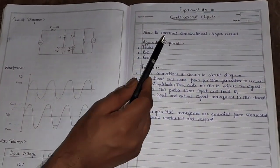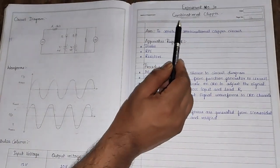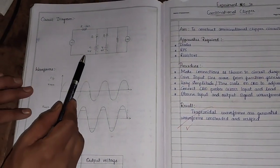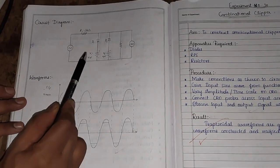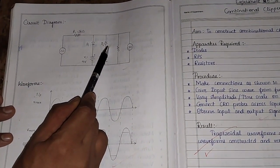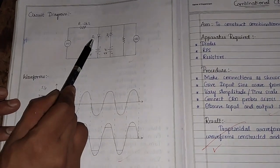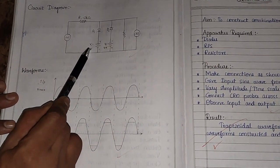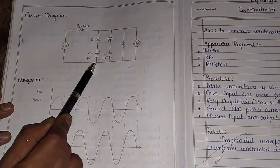In this video I will show you how to perform a combinational clipper circuit. This circuit consists of two diodes, D1 and D2. The cathode of D1 is connected to the positive terminal of power supply V1, and the negative is connected to ground.